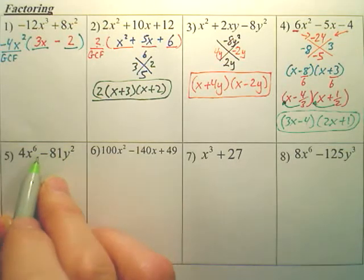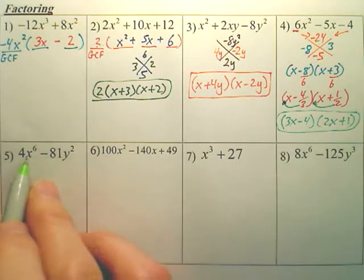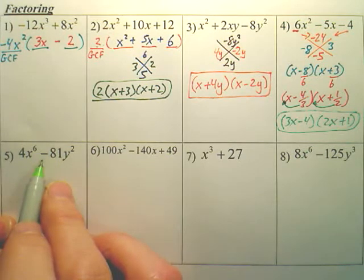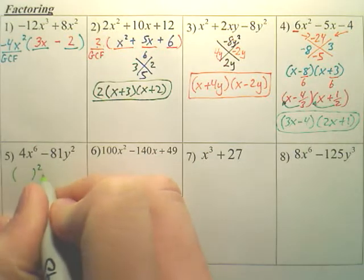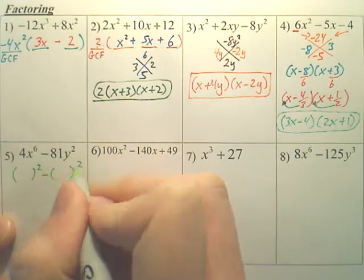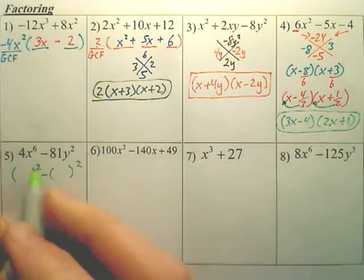For this one, we want to factor this. Whenever you have two squared values with a minus between, it's called a difference of squares. So what you're looking for is two squared things.